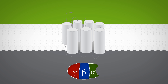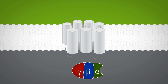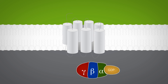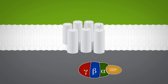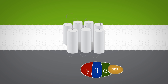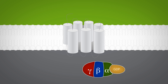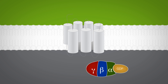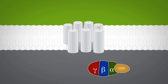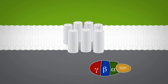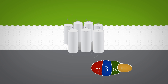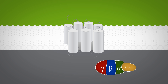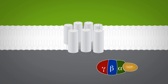an alpha subunit and a beta-gamma dimer. Normally, the G-protein is bound with a guanosine diphosphate molecule and is inactive. Unlike ionotropic receptors, the GPCRs have no pore.